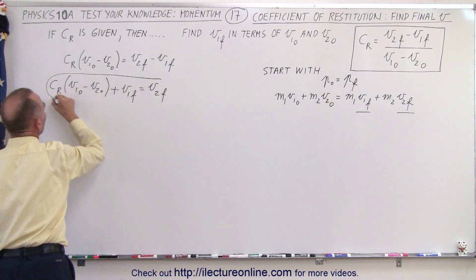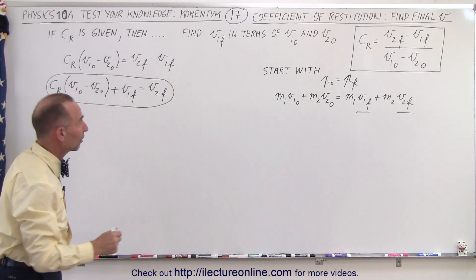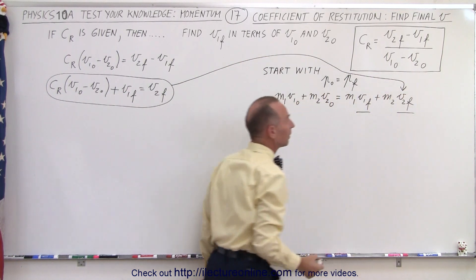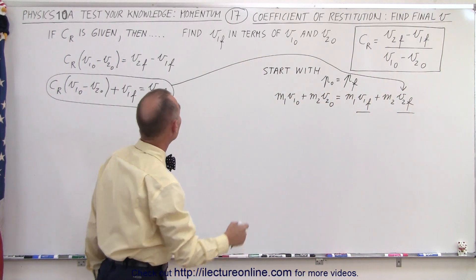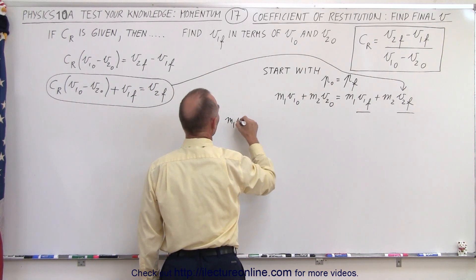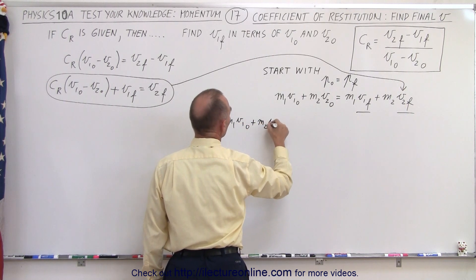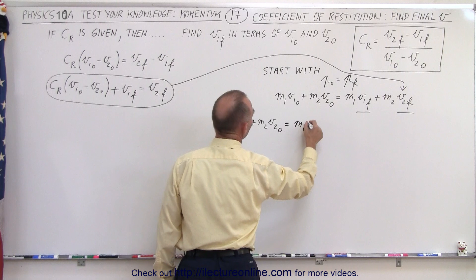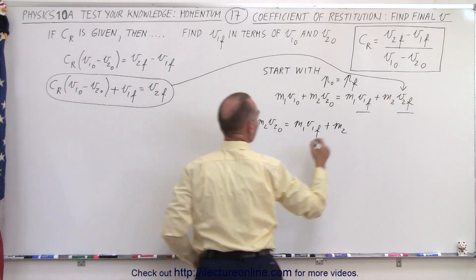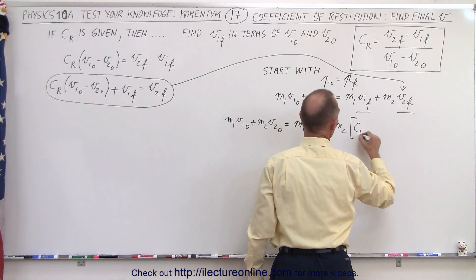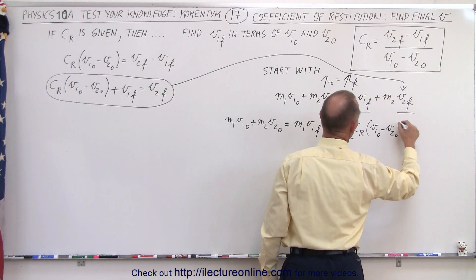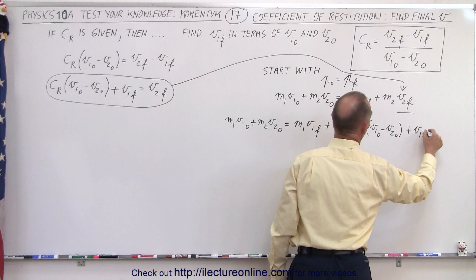We take this relationship from the coefficient of restitution equation and plug it into our momentum equation, thus eliminating v2 final and allowing us to find v1 final. So we have: m1·v1_initial plus m2·v2_initial equals m1·v1_final plus m2 times the whole expression — coefficient of restitution times (v1_initial minus v2_initial) plus v1_final.